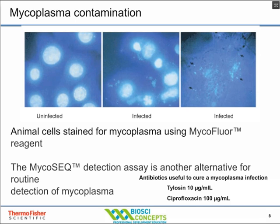MycoSeq is an alternative detection method — a PCR-based multiplex primer design system for real-time PCR to detect and quantitate the amount of mycoplasma contamination in a culture. These tests should be routinely done for anyone doing cell culture, especially if you're going to apply a product based on your cell culture. You can kill mycoplasma using various antibiotics, but they're really difficult on the cells, so the best thing to do is discard your cells and get a new batch that are non-contaminated.